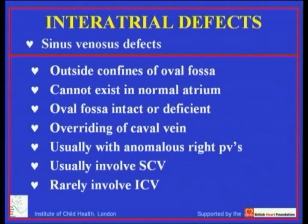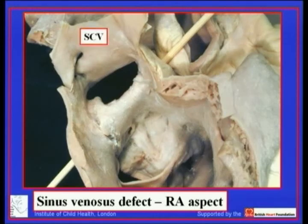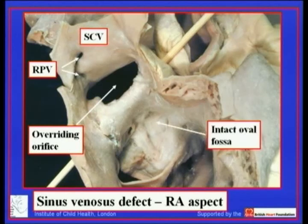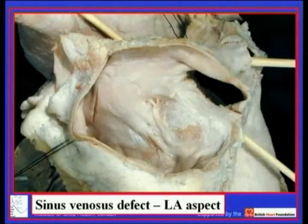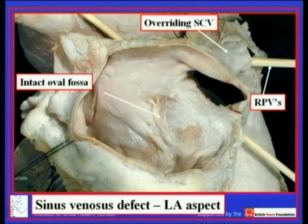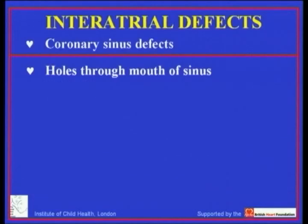Usually they involve the superior caval vein, but they can also involve the inferior caval vein. Here is one of the Royal Brompton specimens — an exquisite specimen, this is an adult. You are looking down on the right atrium from above. This is the mouth of the superior caval vein — you can see that it is overriding. There are the anomalous right pulmonary veins, and the oval fossa is intact. We've passed this probe from front to back through the superior rim of the fossa, which rather than being a fold has become a tube of myocardium containing the core. And when you look at it from the other side, although the probe passes from front to back of the heart, you cannot see any of the probe in the superior rim of the fossa. So the essence of the malformation is integrity of the oval fossa with overriding of the superior caval vein.